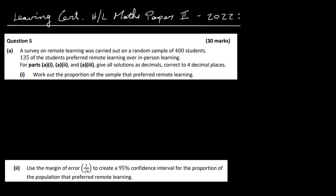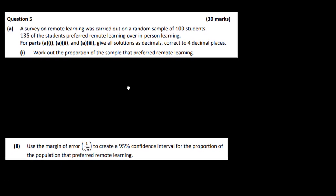Let's have a look at the Leaving Cert Higher Level Maths Paper 2, 2002, and this is question 5. A survey on remote learning was carried out on a random sample of 400 students. 135 of the students preferred remote learning over in-person training. For parts A1, 2 and 3, give all solutions as decimals correct to 4 decimal places.